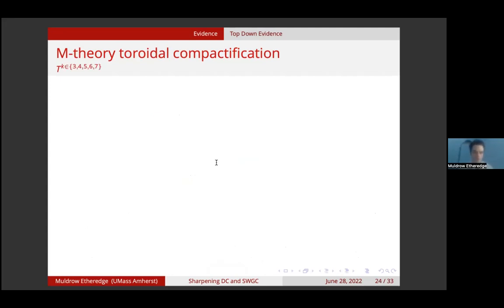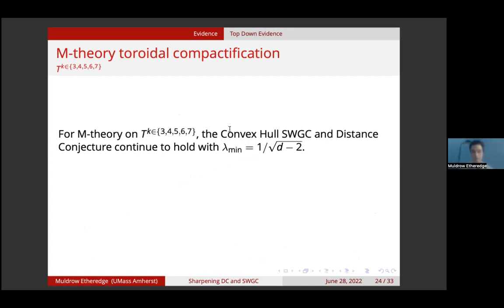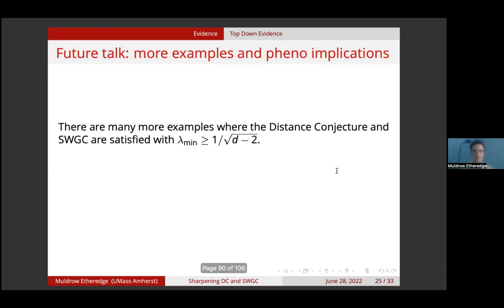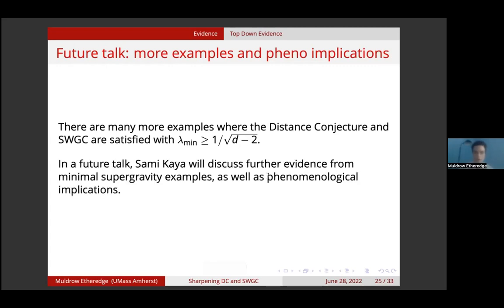We can then compactify M-theory on higher-dimensional tori, from the 3-torus all the way to the 7-torus. The convex hull scalar weak gravity conjecture and distance conjecture continue to hold with lambda min being 1 over square root of d minus 2. This is non-trivial — for instance, for the 7-torus there are 70 moduli and many sources of particles. See our 22-page appendix for details. In a future talk, Sami Kaya will discuss further evidence from minimal supergravity examples, as well as phenomenological implications of this bound.